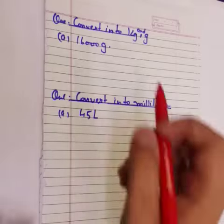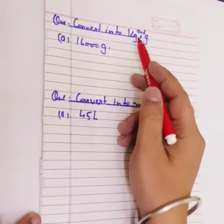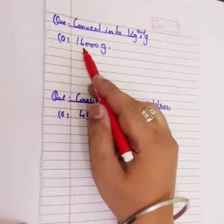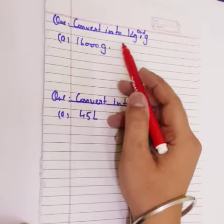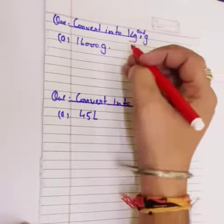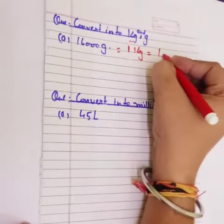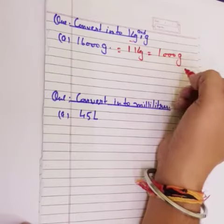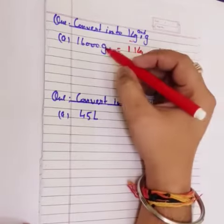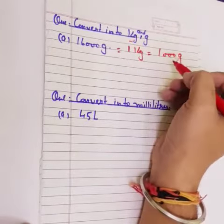The first question is Convert into KG and Gram. A. 16,000 Gram. ये Gram में दे रखाई से change करना है KG में. तो 1 KG is equal to 1000 Gram होते हैं. ये Gram दे रखाई से change करना है KG में.